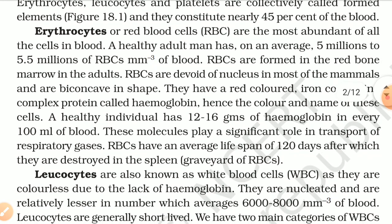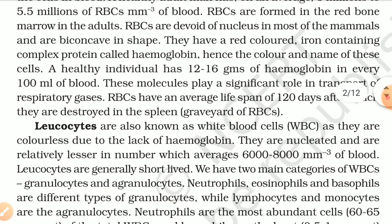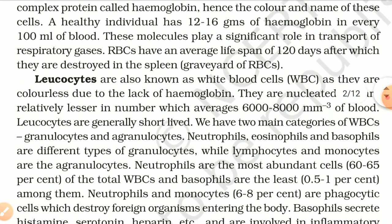RBCs are formed in the red bone marrow in adults. RBCs are devoid of nucleus in most mammals and are biconcave in shape. They have a red coloured, iron-containing complex protein called haemoglobin. A healthy individual has 12 to 16 grams of haemoglobin in every 100 ml of blood. These molecules play a significant role in transport of respiratory gases. RBCs have an average lifespan of 120 days, after which they are destroyed in the spleen — the graveyard of RBCs.